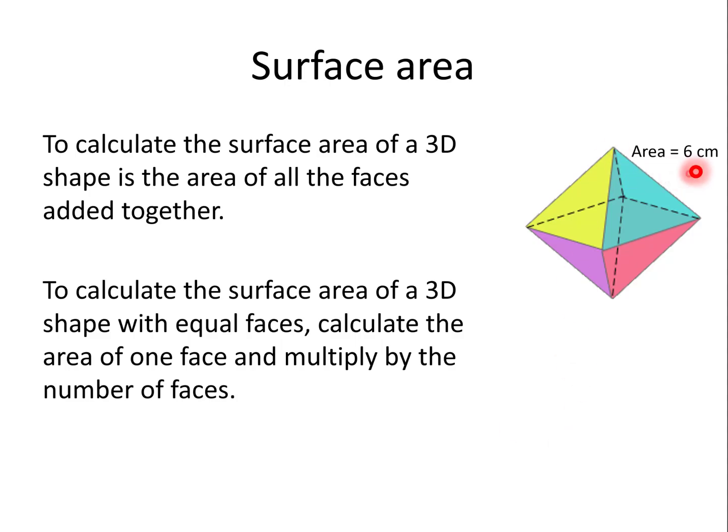So here, the area of one side is 6 centimetre squared. So it would be 8 sides, so it would be 8 lots of that 6, 6 times 8, which gives me a surface area of 48 centimetres squared. It is squared, not cubed, because it's an area of the outside. It's not the volume.